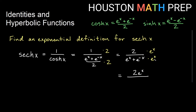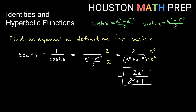So we would get 2e^x on top. Distributing e^x on the bottom gives us e^(x+x) which is e^(2x), and then e^x times e^(-x) gives an exponent of zero, so e^0 equals 1. So we get a cleaned-up exponential definition for hyperbolic secant of x: 2e^x/(e^(2x) + 1).